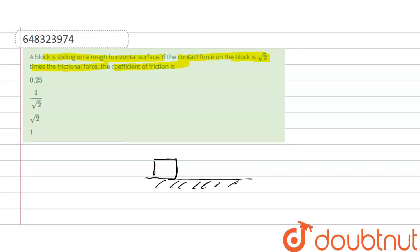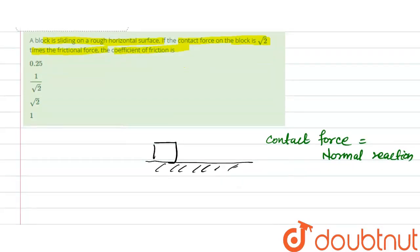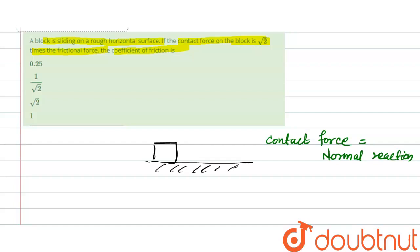The contact force means the normal force, so the contact force is equal to the normal reaction N. As per the question, the normal reaction on the block is root 2 times the frictional force, so N is equal to root 2 into f, where f is the frictional force.